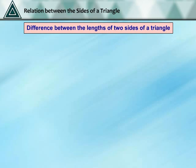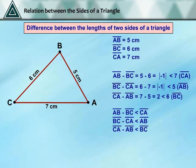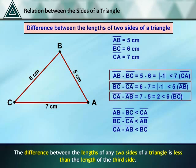Difference between the lengths of two sides of a triangle: take the same triangle and find the difference between the lengths of any two sides, then compare it with the third side. We see that the difference between the lengths of any two sides of a triangle is less than the length of the third side.